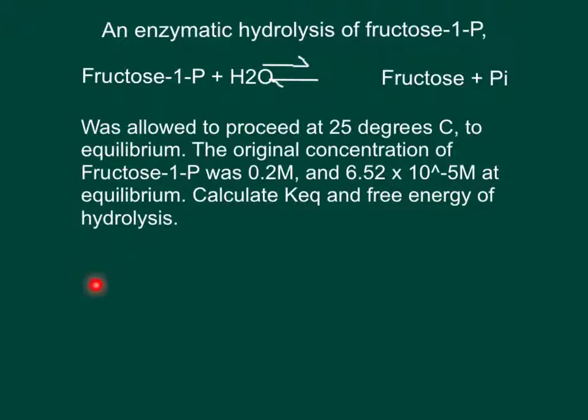So our free energy of hydrolysis, delta G standard state, is equal to negative RT times the natural log of KEQ. It wants us to find KEQ and the free energy. We know how to find the free energy, but we have an unknown variable, so we have to solve KEQ first.